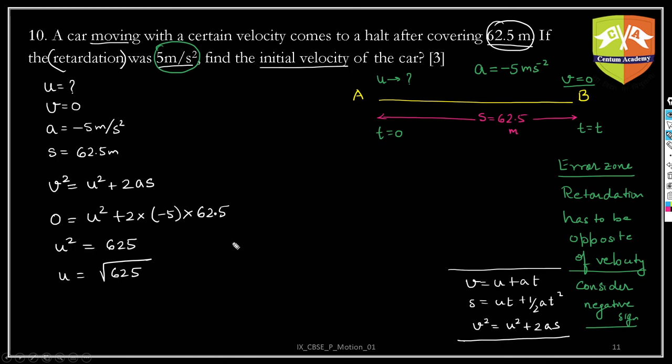And we will take only positive value, not the negative value. Why? Because in this direction we have considered positive u. So we are assuming that the velocity was positive in this direction. So since a is negative, this positive and acceleration negative is the right combination. So u is clearly 25 meter per second. And this is our solution.